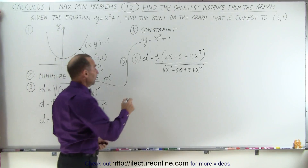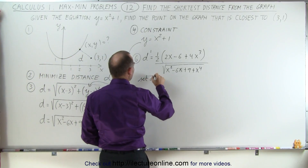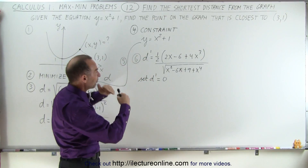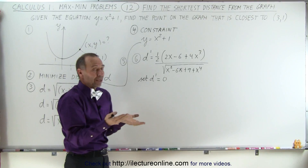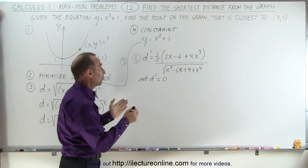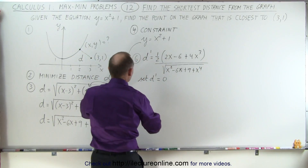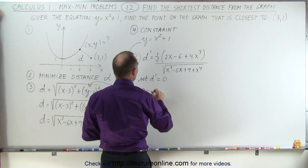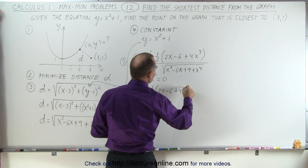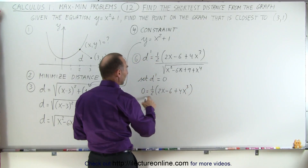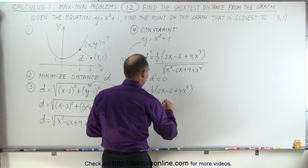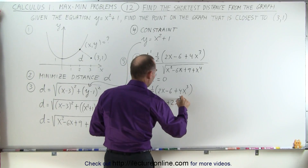We set d prime equal to 0. We have a fraction set equal to 0, so the denominator doesn't matter — if the numerator is 0, the denominator is irrelevant. So we set the numerator equal to 0: that means 0 equals one-half times (2x minus 6 plus 4x cubed). Multiplying through by one-half, this simplifies to x minus 3 plus 2x cubed.